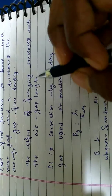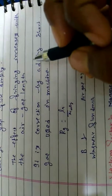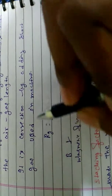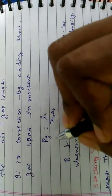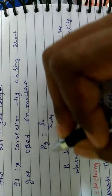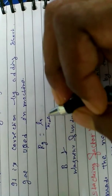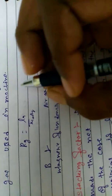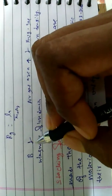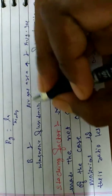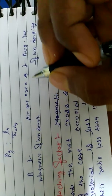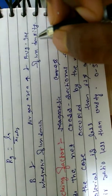The effect of fringing increases with the air gap length. It is corrected by adding a short gap used in machines. The reluctance of the air gap Rg is equal to La divided by Mu0 times Az, the area of the air gap. When the gap increases, it decreases the magnetic flux density, so we have to increase the air gap area, which decreases the average gap flux density.